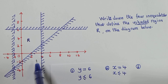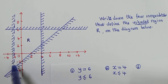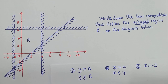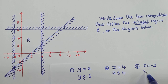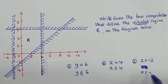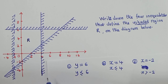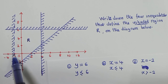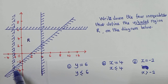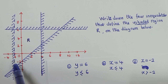For number three, this line only cuts the x-axis, so x equals negative two. To show the inequality, we say x is greater than negative two. We need to be careful here — because the line is dotted, negative two is not included, so we do not put the equal sign. It's strictly greater than.